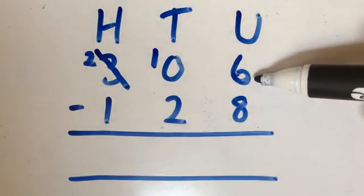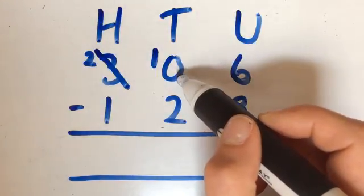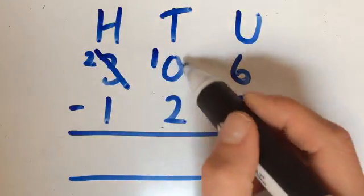If we go back to our units column now, and go up to our tens, we can borrow a 10 now, because we've got 10 lots of 10.